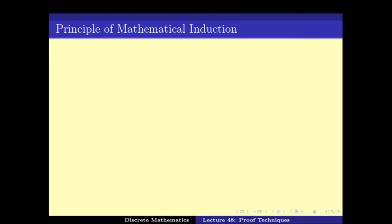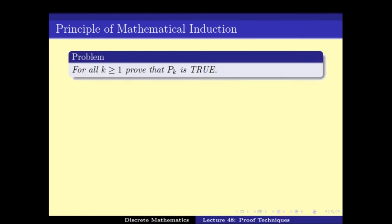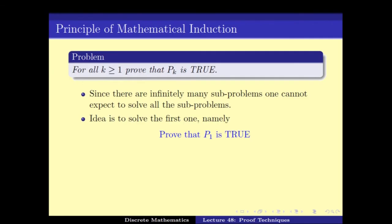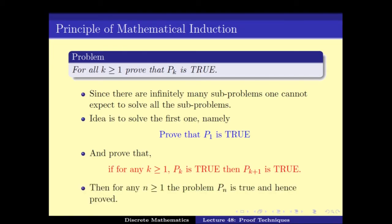And once we split up this problem into smaller problems, the main idea is, so this is the problem we have to solve: for all k prove that Pk is true. There are infinitely many sub-problems, so one cannot expect to solve all of them one by one. But the idea is first let us prove the first case P1 which we call the base case. Then if for any k greater than 1, if Pk is true then Pk plus 1 is true. And if you can solve it then we would be done because P1 is true implies P2 is true, P2 is true implies P3 is true and so on. And hence this would prove that for all n the value Pn is true and hence the problem.